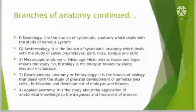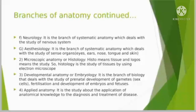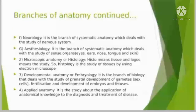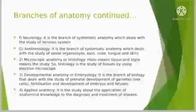In neurology, we study about the nervous system, which includes the central nervous system, peripheral nervous system, and the autonomic nervous system. In esthesiology, we study about the different sense organs in the animal's body, such as eyes, ears, nose, tongue, and skin.